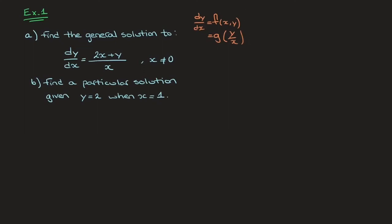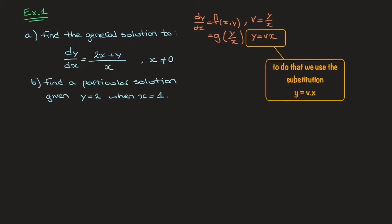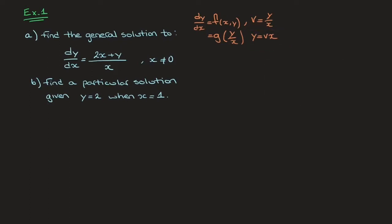To solve it we'll define a new variable which we typically call v, which equals y over x, so that y will equal v times x. The idea will be to rewrite our differential equation in terms of the new variable v and x. Doing so will turn our differential equation into a separable differential equation, which we'll find far easier to solve. And so in essence, that's what homogenous differential equations are all about.